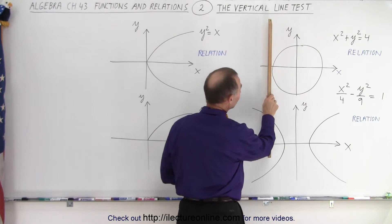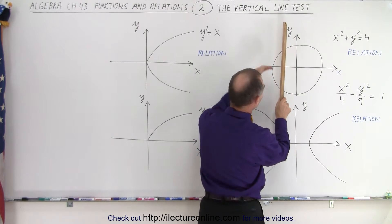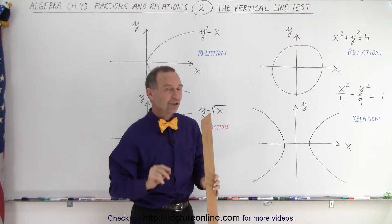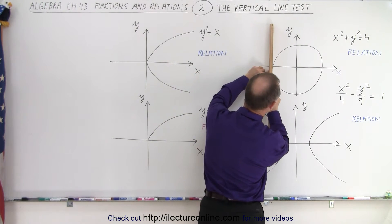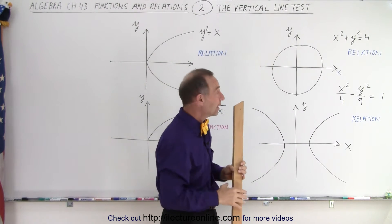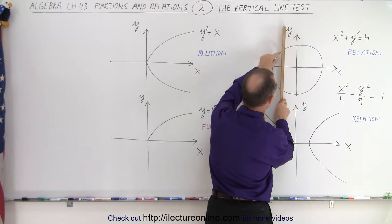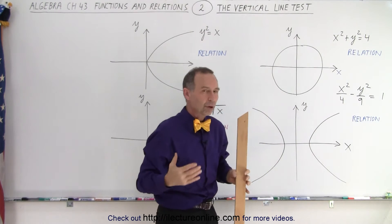If at any point the curve crosses the vertical line in more than one spot, it is not a function—it's a relation. Notice at the very edge it only touches at one location, which is still okay. But when we move it across, we now have two places where it crosses the vertical line. That makes it a relation.